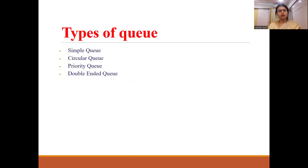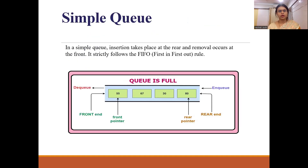There are different types of Queue, categorized into four types: the first is the simple queue, then the circular queue, priority queue, and the double-ended queue. In the simple queue, insertion takes place from the rear side and removal occurs at the front side, and it strictly follows the principle of first in first out.